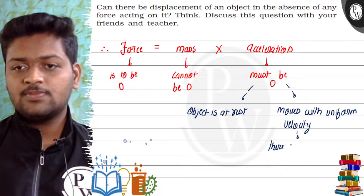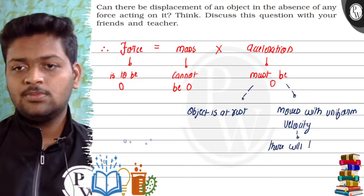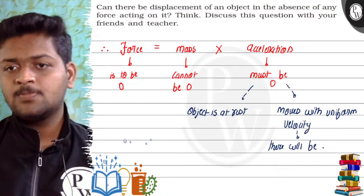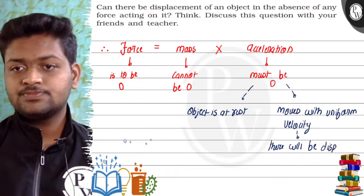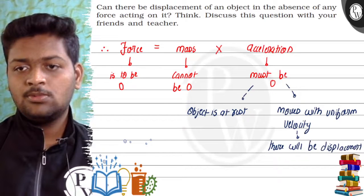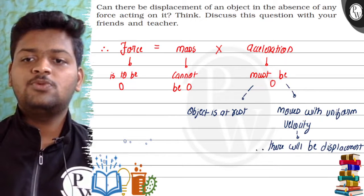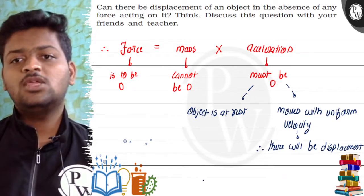If you move with uniform velocity, there will be displacement if the object will move with uniform velocity.